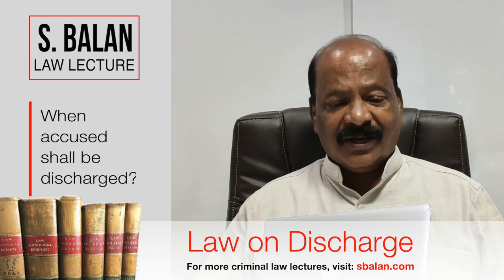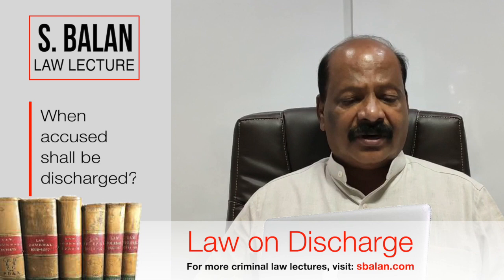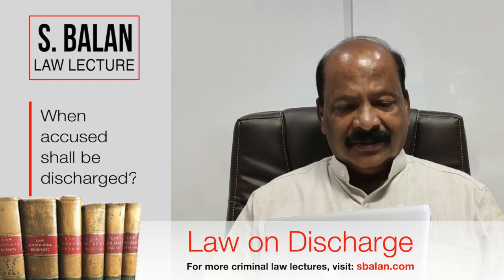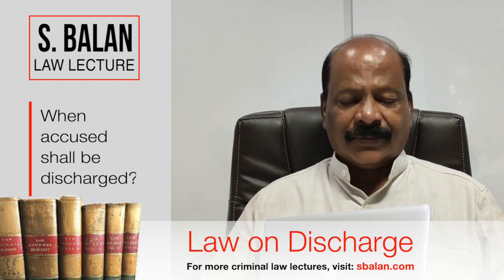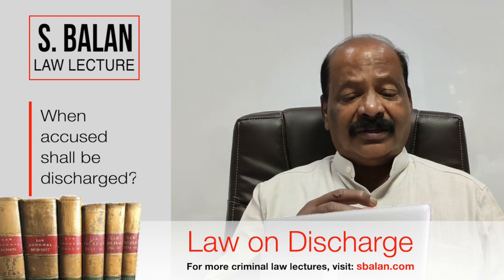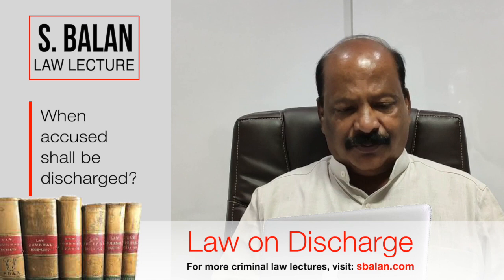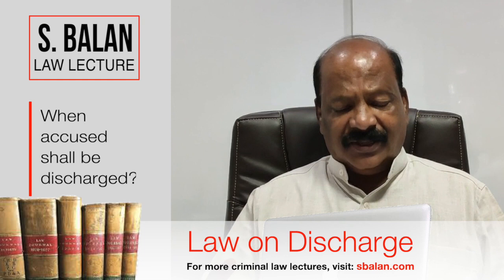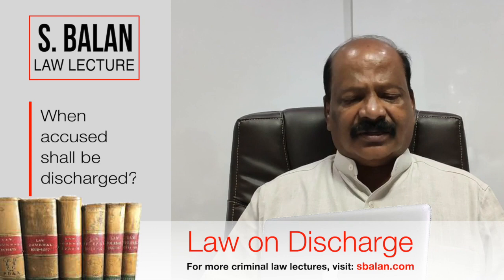When the investigation is culminated and the IO decides to commit the accused for trial, the trial court should take cognizance. Once the cognizance stage is complete, the next process is framing of charge and discharge. The moment the charge sheet is filed under Section 173(2), along with documents under Section 173(5) and material objects, the next stage is whether there is material to proceed further or the trial court should discharge the accused.